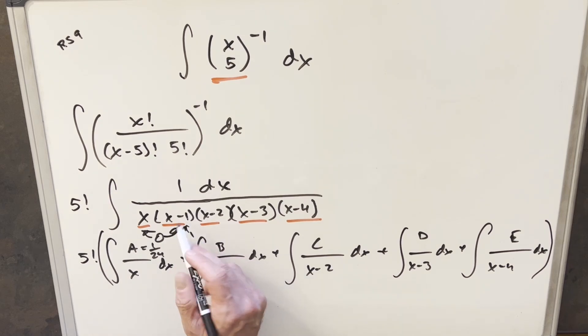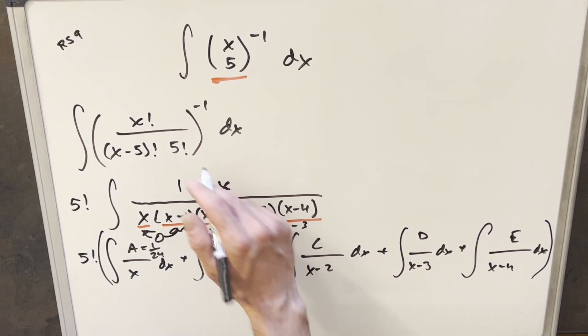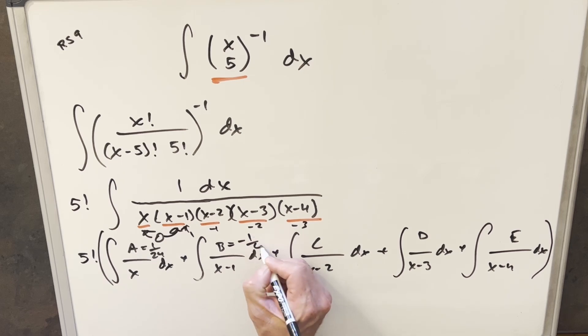And then we'll plug in the 0 to all these terms. This whole fraction will become 1 over 24. And if I plug a 1 in x minus 1, that term will become 0. I cover that up and plug a 1 into all the other terms. So x is 1. We won't worry about that. Here, we'd have a minus 1 times a minus 2 times a minus 3. That's going to be a minus 6. 1 over minus 6 is going to be minus 1 over 6.